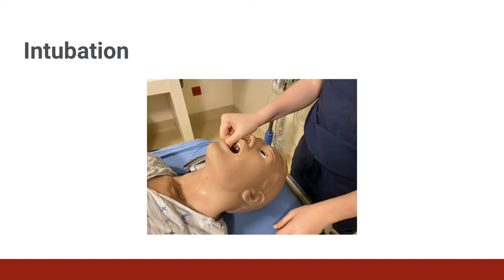Once the patient is paralyzed, your first maneuver is to open the mouth using the scissor technique. This is done by placing your right thumb on the patient's lower teeth and your right index or second finger on the patient's upper teeth, then pushing the mouth open. Be sure not to put any pressure or pinch the lips. Also, keep your fingers as far to the right of the mouth as possible to allow space for the laryngoscope blade.